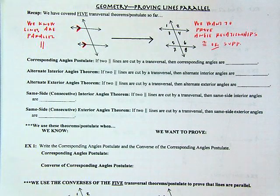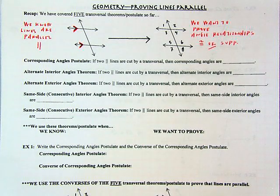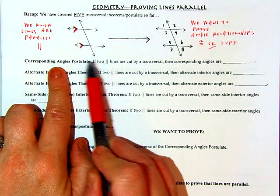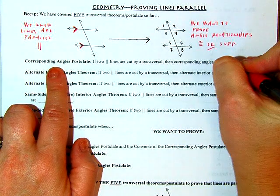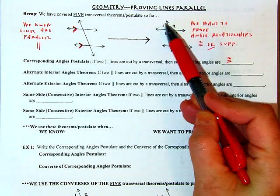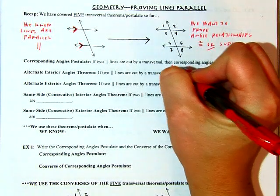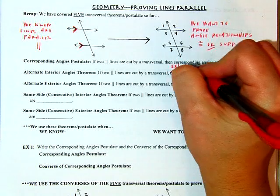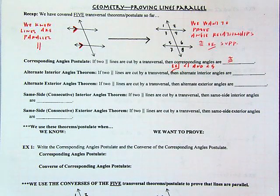We have one postulate and four theorems. A postulate is a basic, obvious idea that we know is true — we don't need to prove it. Anytime we see a theorem, we know it's backed by a formal proof. So corresponding angles, that is our postulate. If we know that we have two parallel lines cut by this transversal, then any corresponding angles would be congruent. I can picture how angle one would slide into five's position perfectly. So corresponding angles would be like one and five, and the relationship is that they are congruent.